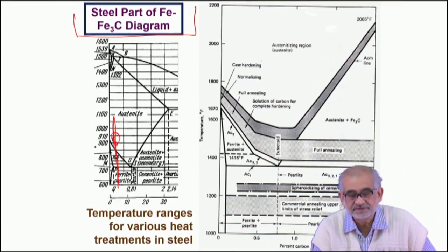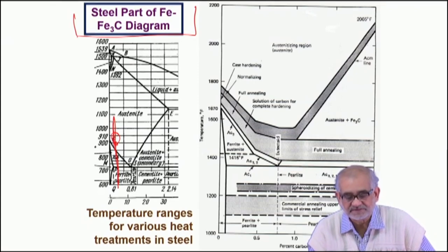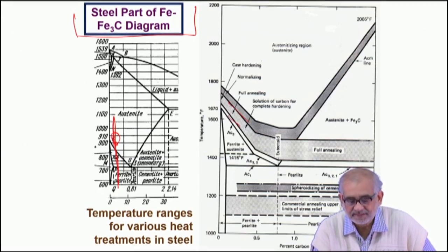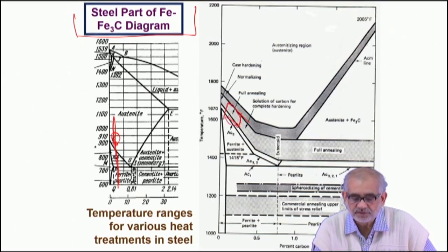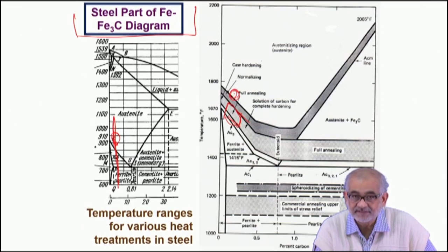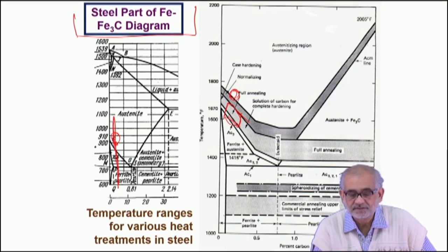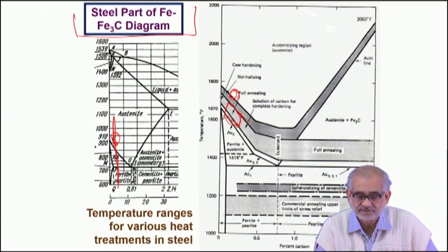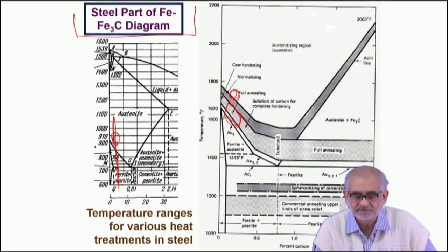This is the general guideline for all kinds of heat treatments in steel. Typically for hardening treatment this is the temperature band, and since we are dealing with low carbon, this is the region of our interest. We carry out the carburizing treatment at slightly higher temperature. Since we do it at fairly high temperature and the time period is longer, we generally end up getting a very coarse microstructure, which is actually detrimental for mechanical properties. So when we reheat, we reheat to about this temperature and from there we have to quench fast.